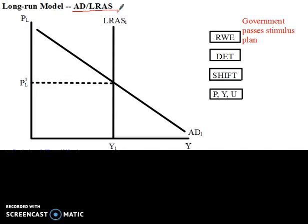On my graph I have my downward sloping aggregate demand curve, and that's essentially like the aggregate expenditure curve. Then we have the perfectly inelastic, perfectly straight up and down long-run aggregate supply curve — that's like the production possibilities curve, and it is perfectly inelastic because of monetary neutrality. Nominal variables do not change real variables in the long run on the supply side.